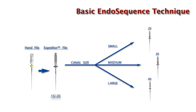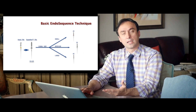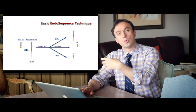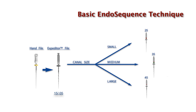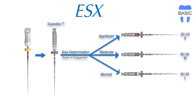To make the expediter's journey safer down the canal, instead of starting from a size 10 hand file, we start from a size 15/02 hand file. This way, the expediter file is not engaging at the tip — once you have a 15/02 hand file to working length, the expediter is merely cutting laterally and enlarging the taper, helping the finishing file with its booster tip reach the apex predictably and safely. The new ESX protocol became: get the canal to a 15/02 hand file, then use the expediter — a 15/05 — down to the apex. Size determination is based on the level of engagement of the expediter on its journey to the apex.